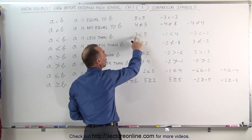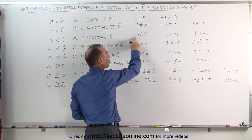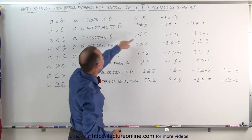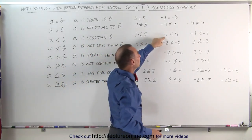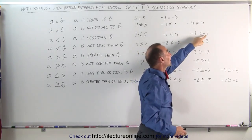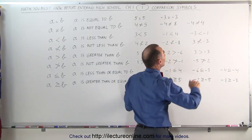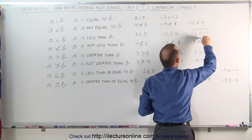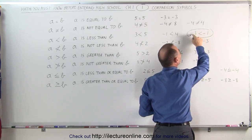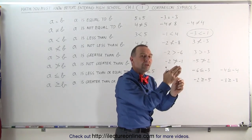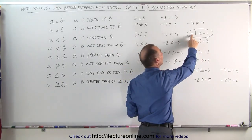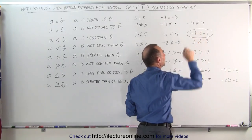A symbol like this means that the number on the left side has a lesser value than the number on the right side. 3 is less than 5. Negative 1 is less than 4. Negative 3 is less than negative 1. This one in particular is sometimes hard to understand because it appears that 3 is bigger than 1, but with a negative sign it means it's further to the left on the number line than negative 1, and therefore negative 3 is smaller or less than negative 1.